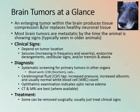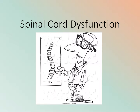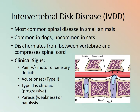Moving to the spinal cord — intervertebral disc disease (IVDD) is the most common spinal disease seen in animals, most common in dogs but not common in cats. The disc herniates from between the vertebrae and compresses the spinal cord. Clinical signs include pain and possible motor or sensory deficits. Type 1 is typically acute onset; type 2 is chronic and progressive, possibly causing weakness or paralysis.